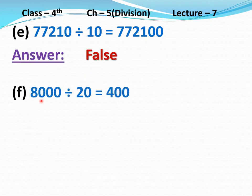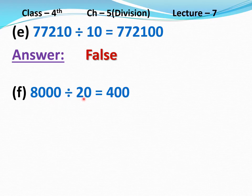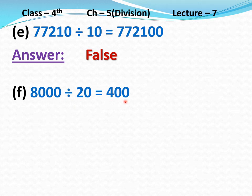Part F: 8,000 divided 20 equal to 400. Three zeros in the dividend and one zero in the divisor cancel, leaving two zeros in the dividend. So 8 divided 2 equals 4, and then we write two zeros, giving quotient 400. This statement is true. Answer: True.